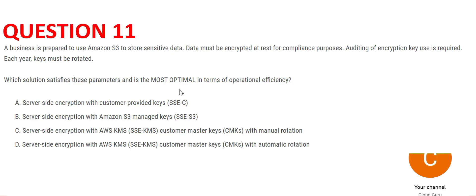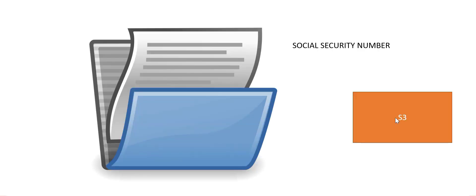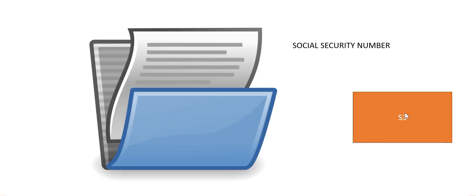Question 11 — you may pause here to read it carefully. Suppose there is a file that contains social security numbers as well as some other details of citizens. The data is confidential and sensitive. The client has to use S3 to store this file. Since it is confidential, it has to be encrypted at rest — when stored in S3, it must be in an encrypted format.